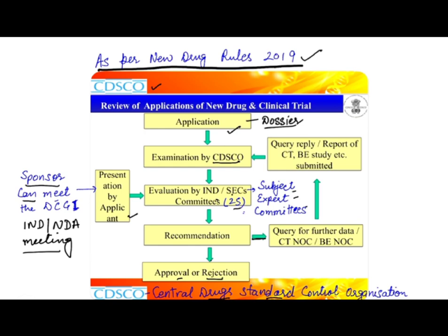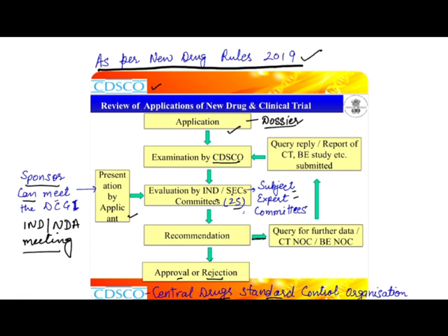The query can be anything — for example, if they cannot understand the clinical trial design the sponsor presented, they may ask for clarification. They might ask small things like why you are collecting a specific volume of blood, and you have to provide the rationale. They can also ask for more preclinical data. For instance, we once submitted an application with preclinical data on one species, and DCGI requested animal data on one more species. We planned that small animal study and resubmitted.